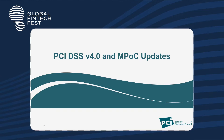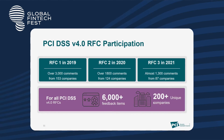Moving on, I'm going to talk about PCI DSS version 4.0 and updates on the mobile payment on core standard. Before getting into the changes, I want to highlight that we went through three major RFCs — requests for comment — from the global industry. RFC 1 received around 3,000 comments from 153 companies, RFC 2 received 1,800 comments from 124 companies, and RFC 3 received around 1,039 comments from 87 companies. Overall, we received close to 6,000-plus feedback from 200-plus unique companies globally.